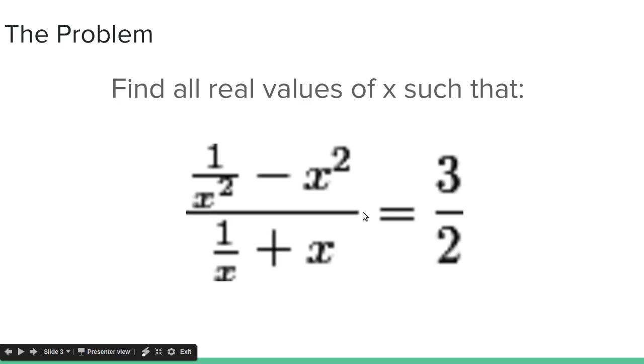Find all real values of x such that 1 over x squared minus x squared all over 1 over x plus x equals 3 halves. Okay, so this equation is kind of confusing because there's a fraction within a fraction and we want to get rid of that.